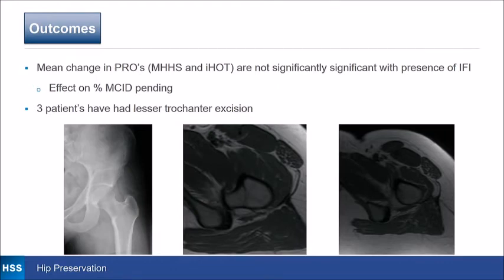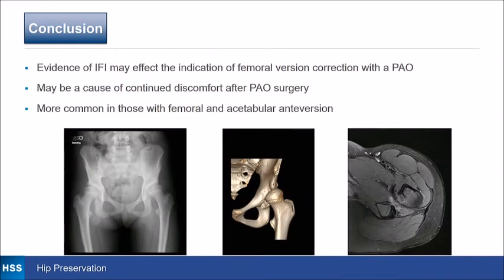Three patients have had lesser trochanter excision. The evidence of IFI may affect the indication for femoral anteversion correction and PAO in some cases. Here's a patient who presented this week walking with a compensated gait — feet forward — but has dysplasia, a break in Shenton's line, femoral anteversion of 40 degrees on CT scan, and edema in her quadratus femoris. She walks with the leg abducted and internally rotated when in pain and complains of deep popping. In this case, we're electing to do a femoral anteversion correction at the time of PAO.